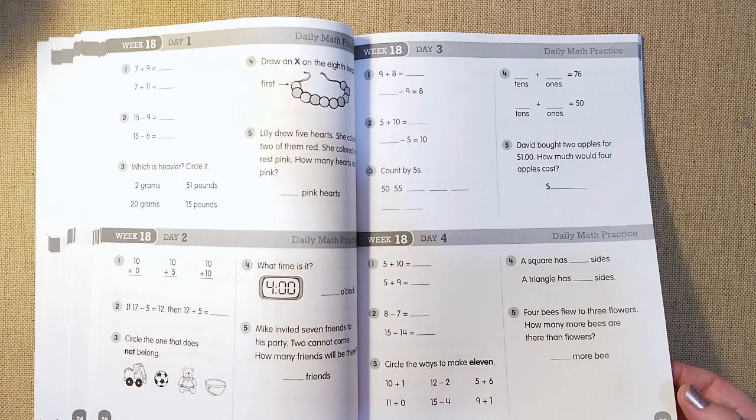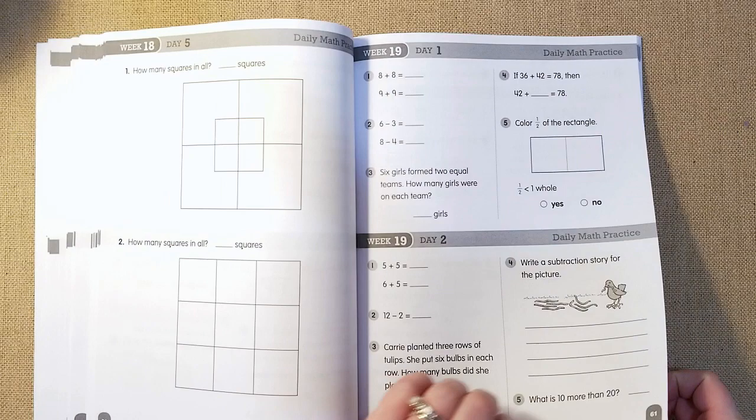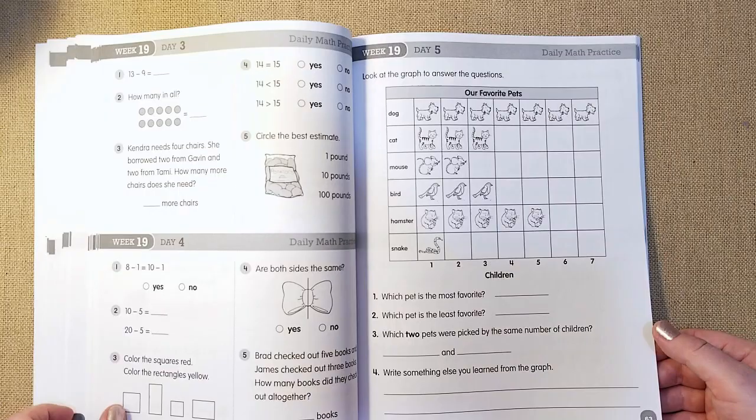They're talking about ones and tens, which I like. Counting by fives. All the things that we have done, but this will be good for her to do on her own independently. How many squares in all? Like some things that might be tricky to the eye, but she can count. So that is really cool.